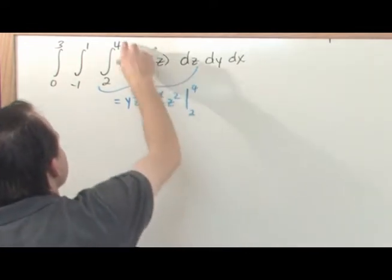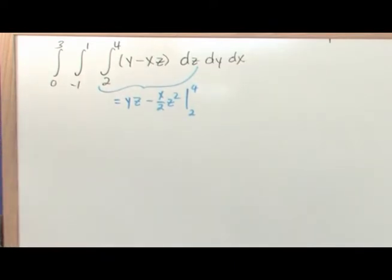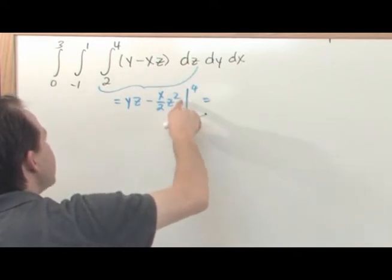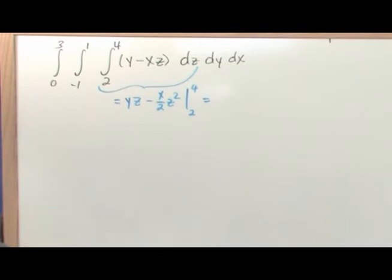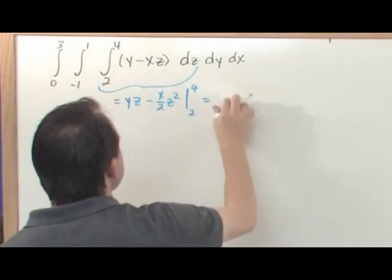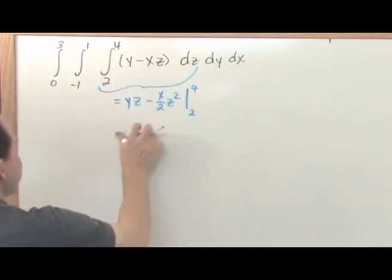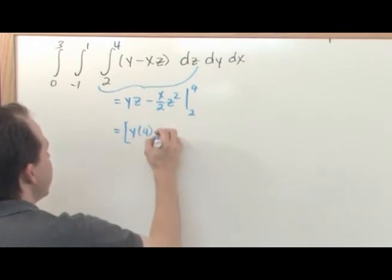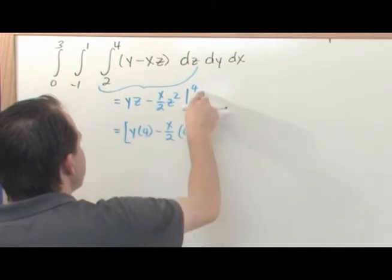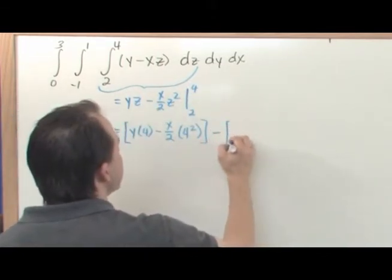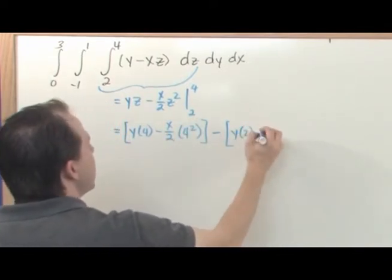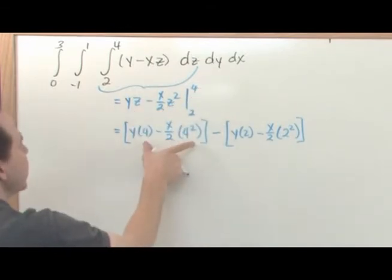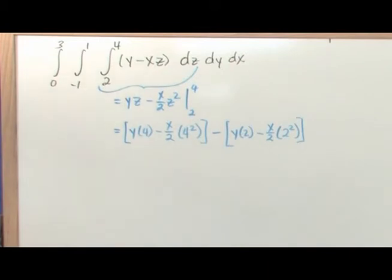It's really not that bad — you just have to know what to hold constant. When plugging in limits of integration, you plug them into only the z's because that's what you integrated over. Plugging in 4: y times 4 minus x over 2 times 4 squared. Plugging in 2: y times 2 minus x over 2 times 2 squared. I take the upper limit, plug into wherever z is, and the lower limit into wherever z is, then simplify.